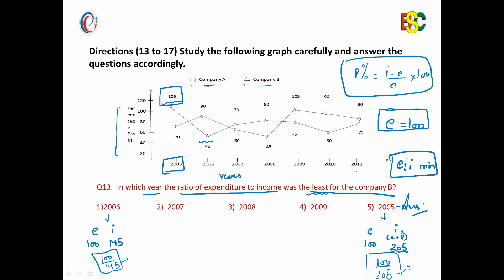So in this way we can calculate the ratio of income to expenditure minimum for company B. You just have to focus on one point: consider expenditure as 100. Then your answer will be found out easily. Thank you.